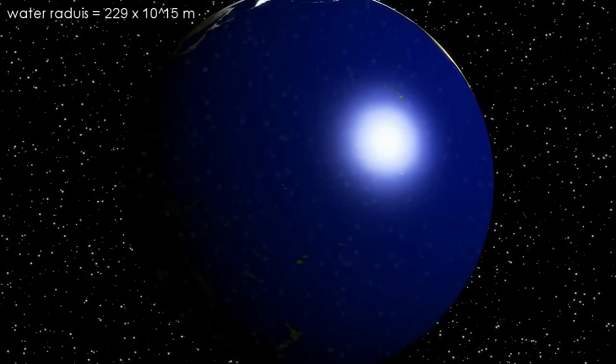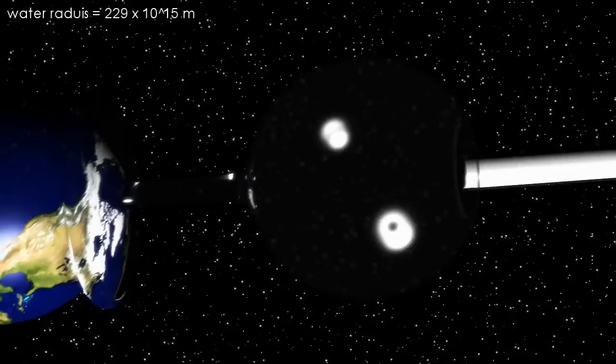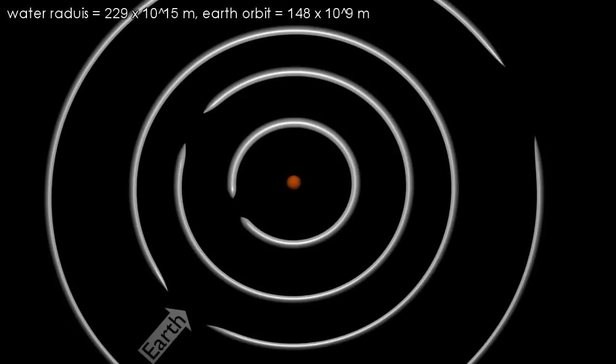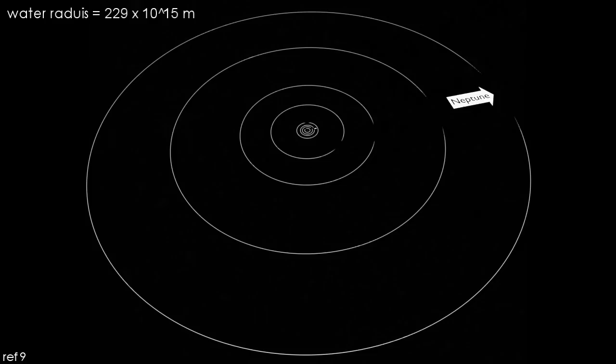So how big is this spherical ball of water? To get an idea, if we had a sphere of water the same size as the Earth, it wouldn't be anywhere near enough. The radius of the Sun is not even close. The Earth's orbit around the Sun, still a long way to go. Neptune is the most outer planet in the solar system, and even its orbit is not enough.